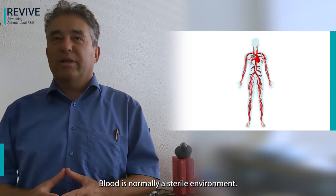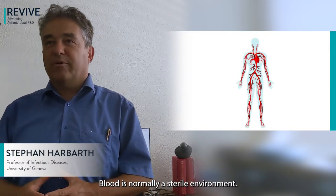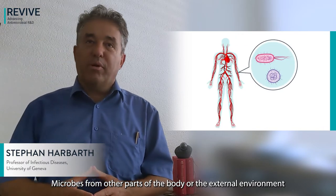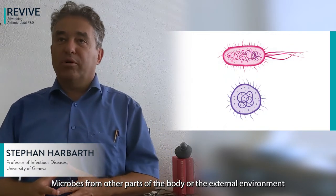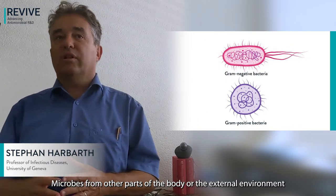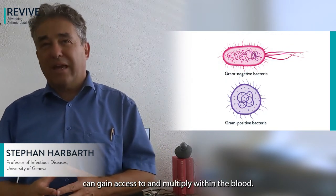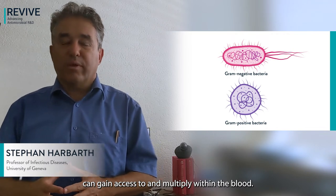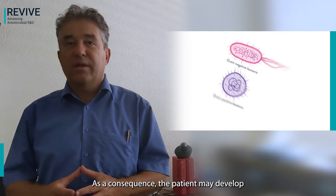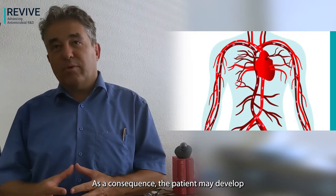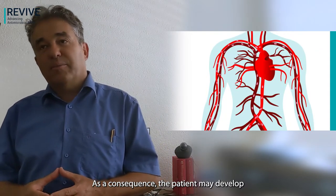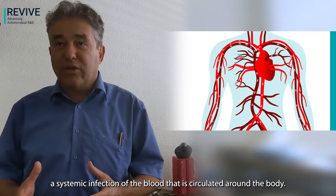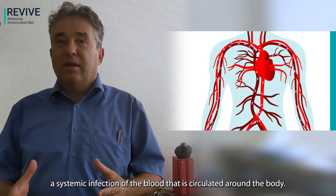Blood is normally a sterile environment. Microbes from other parts of the body or the external environment can gain access to and multiply within the blood. As a consequence, the patient may develop a systemic infection of the blood that is circulated around the body.